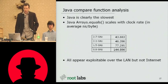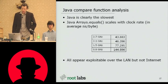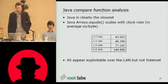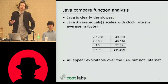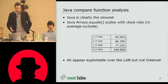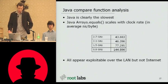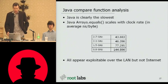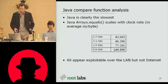We looked at Java a little more closely — it was clearly the slowest. We wanted to see how it would scale with clock rate changes, since some servers are faster than others. We found that the comparison rate per byte tended to scale linearly with the clock rate, as you'd expect. But the interesting thing about this was that all of the...